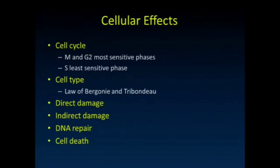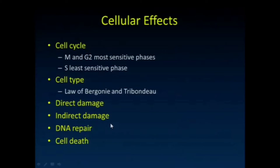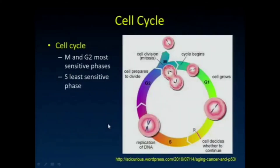We're exposed to radiation on a daily basis, just sitting where we are, and certainly when we step out into the sun. Our body has mechanisms to repair that damage, and sometimes if the damage is great, the cell will just die and not propagate or perpetuate that damage. That's another part of the reason why we don't see a bunch of cancers from radiation effects — our body is set up to repair some of that.